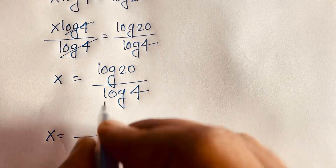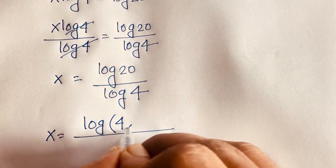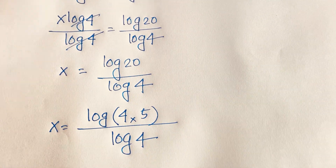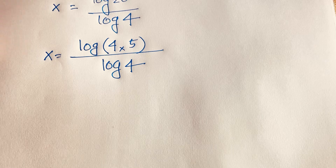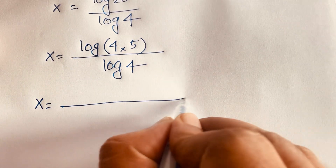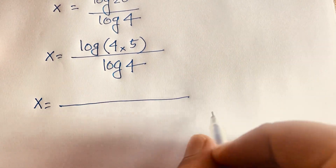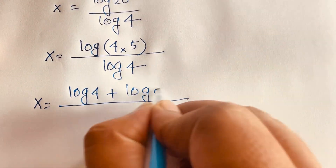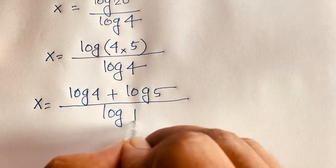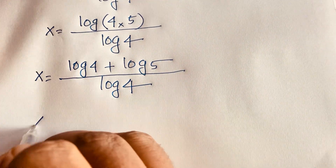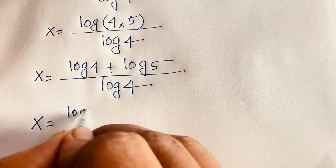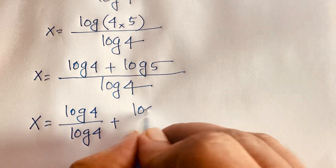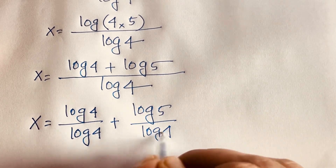We can rewrite log 20 as log(4 × 5). Then, applying the product rule — log(ab) = log a + log b — we get x = (log 4 + log 5) / log 4.